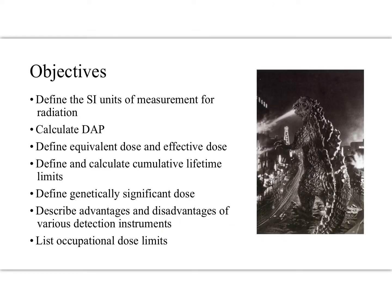Here are the learning objectives I've identified. I want to look at some SI units of measure for radiation, calculate a dose area product, talk about equivalent doses and effective doses, be able to calculate a cumulative lifetime dose limit, talk about a genetically significant dose — which might be the most complicated thing we look at today — and then talk about various detection instruments. Finally, even though it's not in the textbook — Radiography in the Digital Age, third edition by Quinn Carroll — I want to look at occupational dose limits.